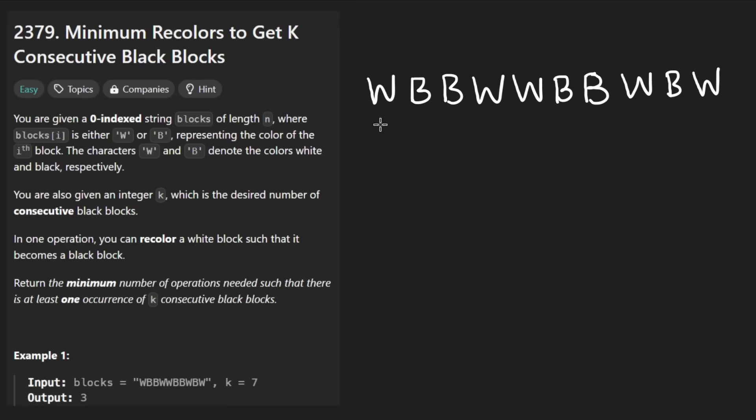But what they are looking for is we're actually given another parameter. So in this example k is equal to 7. That's the other parameter we're given. This is a string and the other parameter is k.